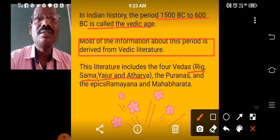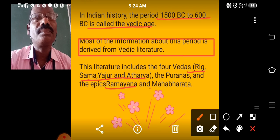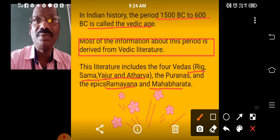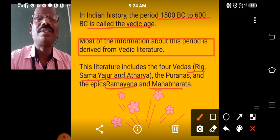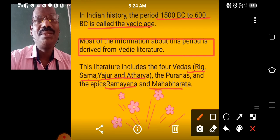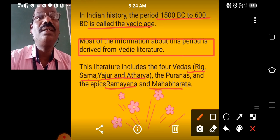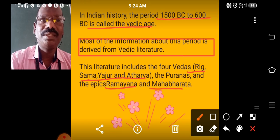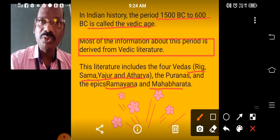Not only Vedas, the Puranas and epics like the Ramayana and Mahabharata — these two books were also written during this period. These are all very famous books. So why is this period called Vedic Age? Because most of the information about this period is derived from Vedic literature. The four Vedas are Rig Veda, Sama Veda, Yajur Veda, and Atharva Veda. Not only these Vedas, two more books were written during this period: Ramayana and Mahabharata.